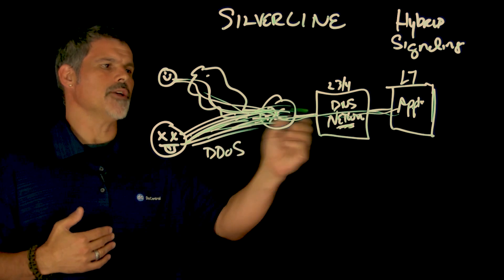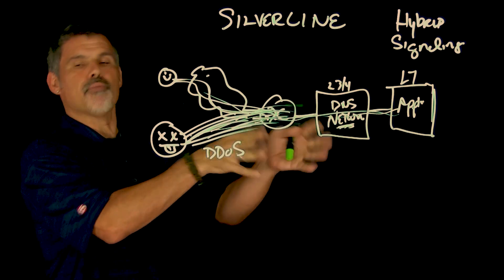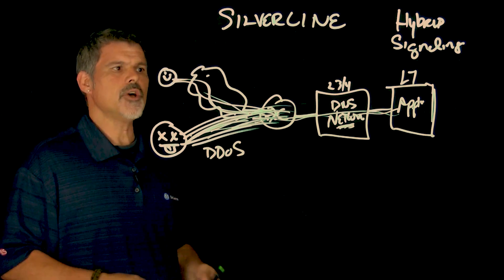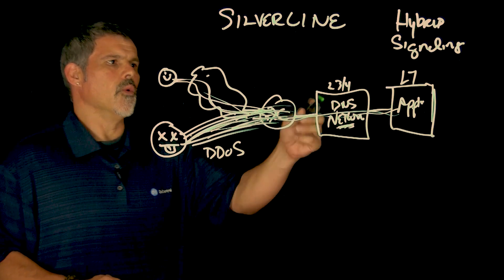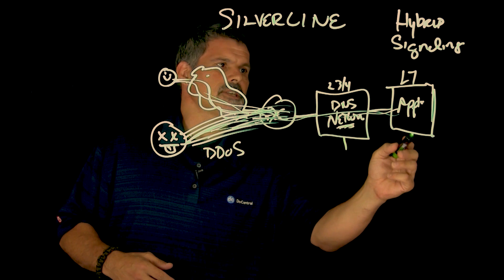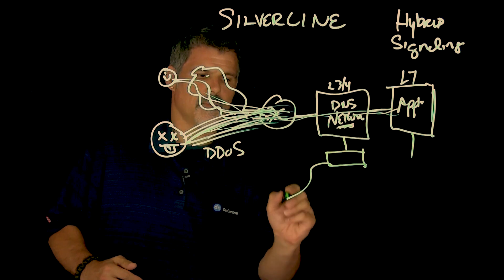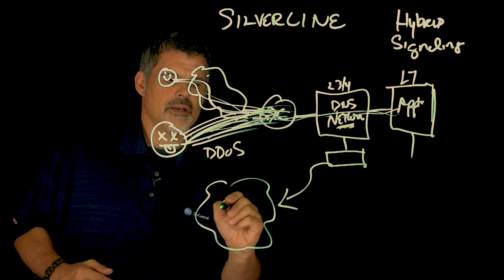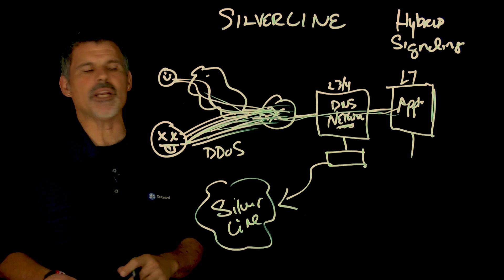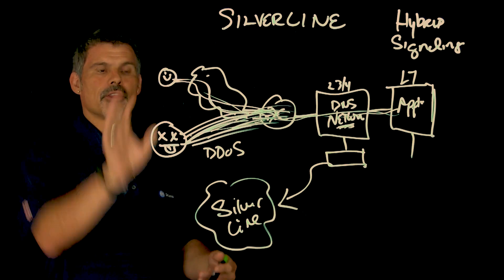And so what happens is all the traffic comes in, and the hybrid signaling allows you to integrate the on-premise solutions with a cloud-based scrubbing system, Silverline. So when you reach the certain thresholds, what can happen is it could be either the layer three or four or the application layer, they actually signal. Let's make our Silverline. And once you reach certain thresholds, Silverline will be notified.